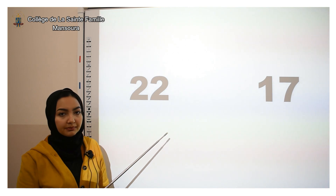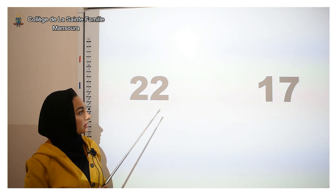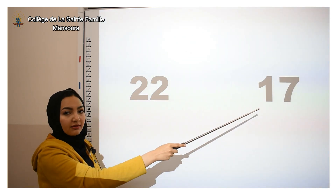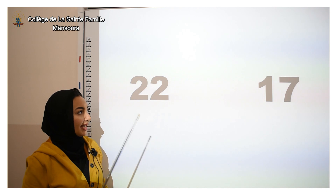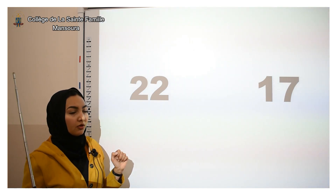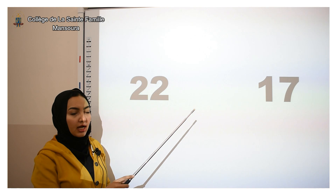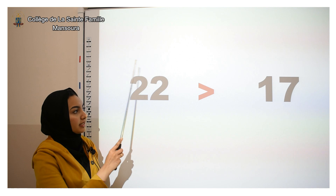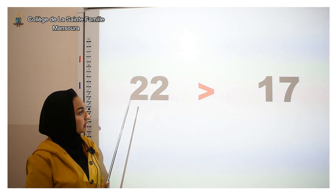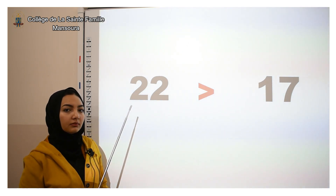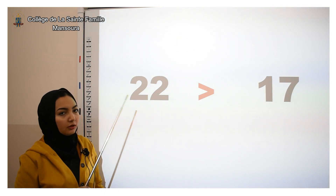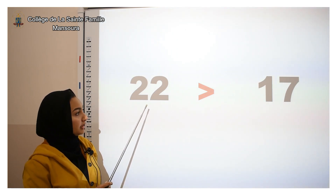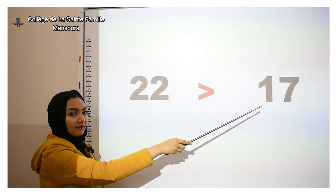Another example — this is your turn. Tell me which one is greater: twenty-two or seventeen? Which one has more? Of course twenty-two. So Mr. Alligator's mouth will face twenty-two, the number that has more. How can you read this? Excellent — twenty-two is greater than seventeen.